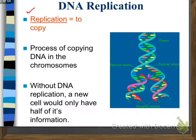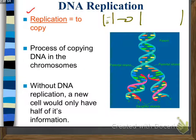We're going to start off with one DNA molecule, and what we're going to end up with is two DNA molecules, each of which are going to have half the original and half what we call complementary strands.